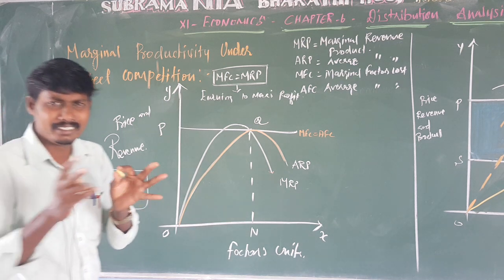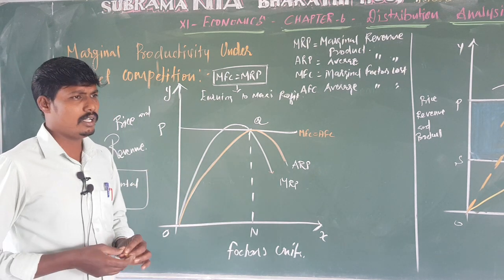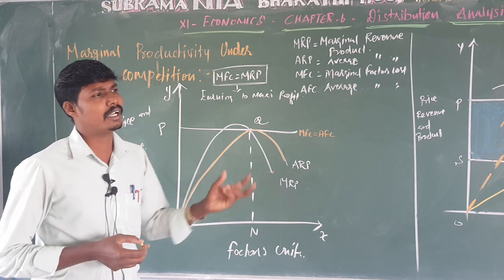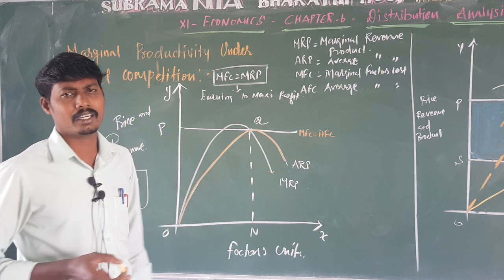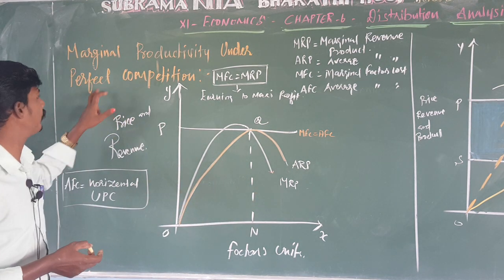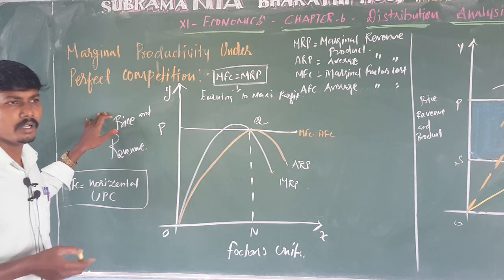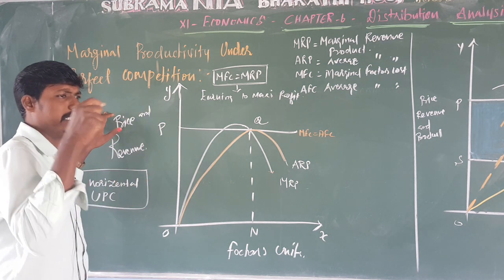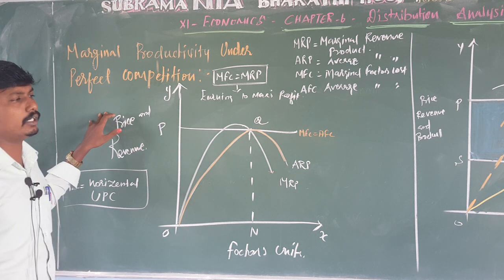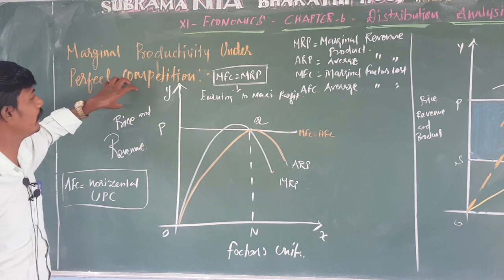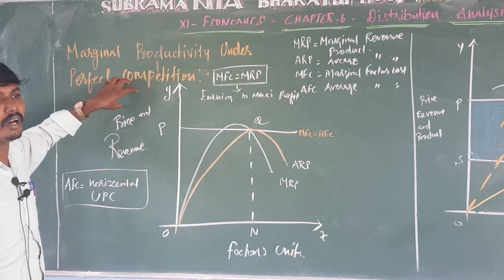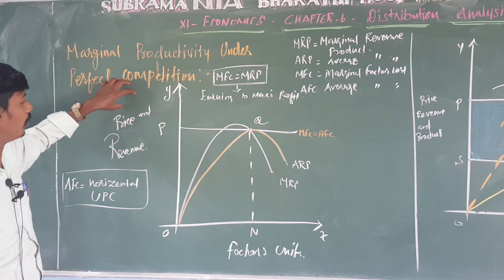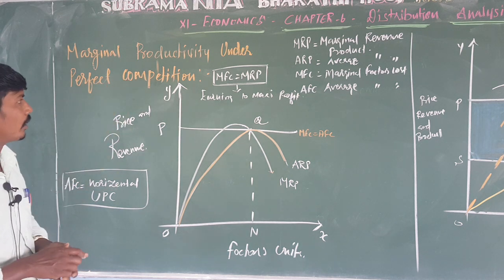What do you mean by perfect competition? It means a large number of buyers and sellers in a market or industry — a situation with a large number of buyers and a large number of sellers.